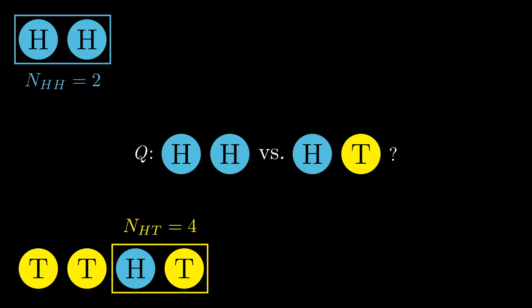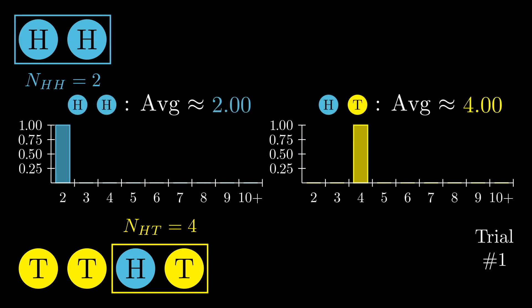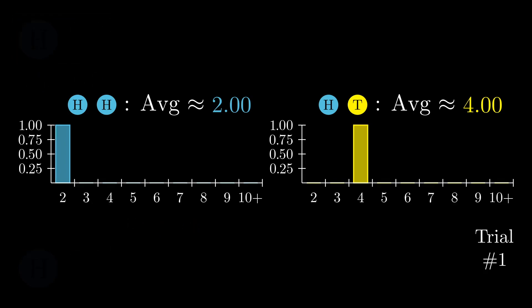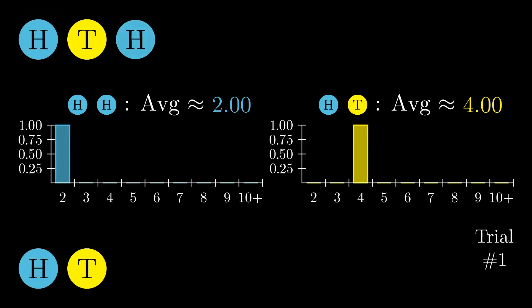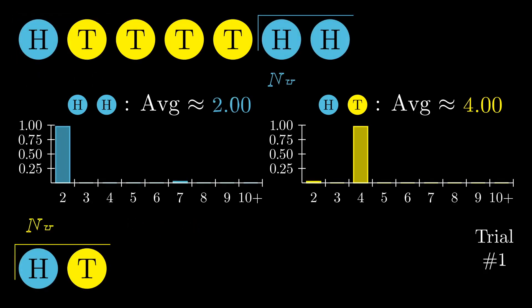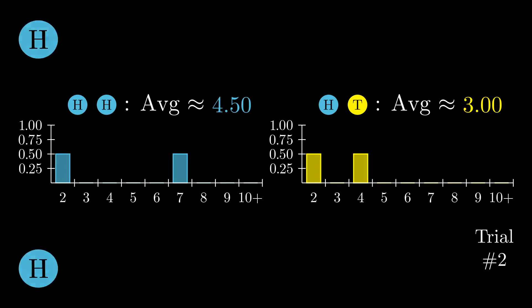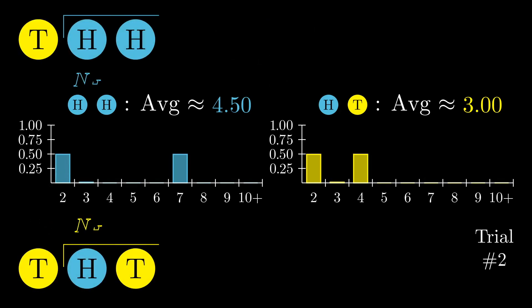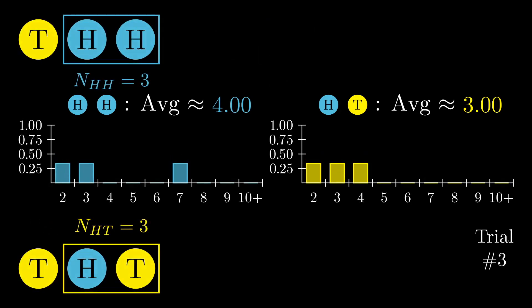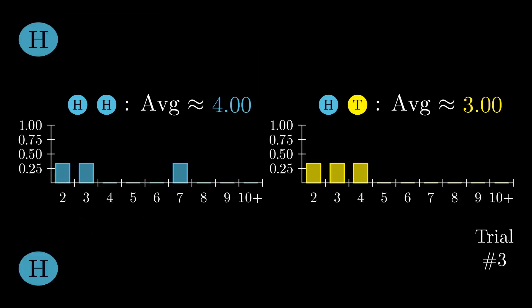You would think there would be absolutely no difference at all between these two. After all, heads and tails are supposed to be completely interchangeable, right? But let's see what happens if we simulate repeating this experiment many times. I'm keeping track of the results on two histograms which show the percent of the time each value comes up for both targets.